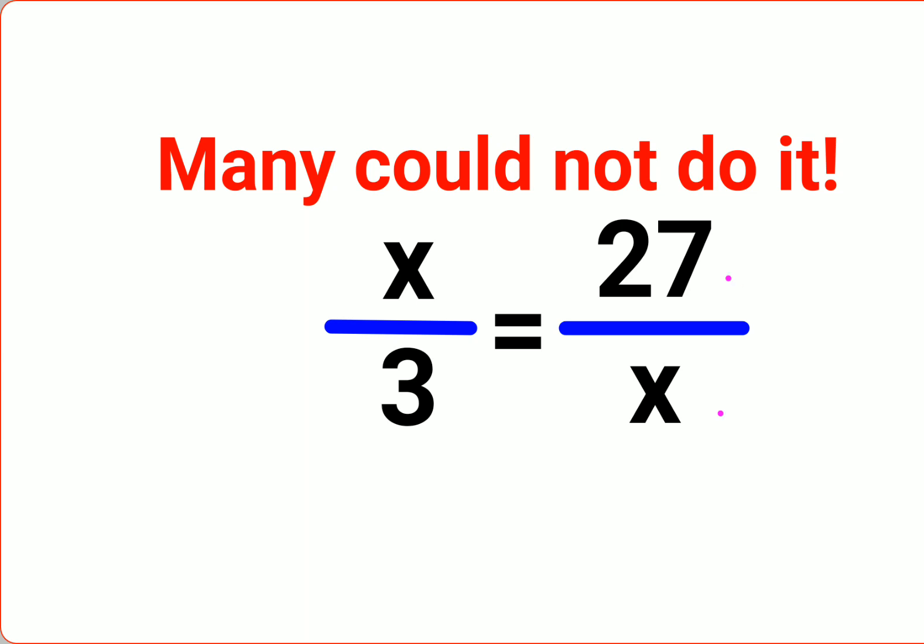Now when you have something like this, a lot of people get confused about how to find the value of x. Those of you who have already found out and think that the value of x is 9, you are absolutely correct but you are half correct. Now sit and think why you are half correct.